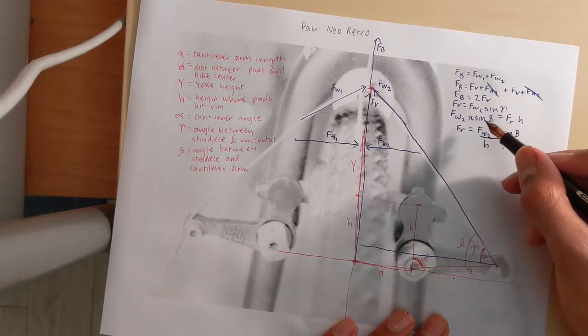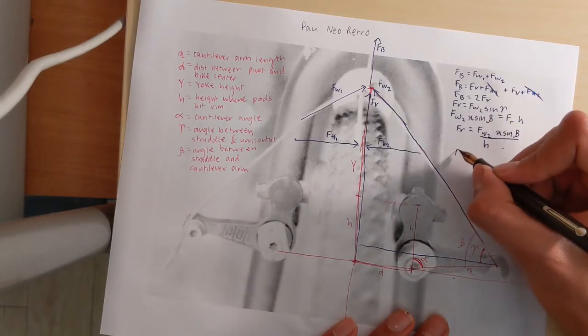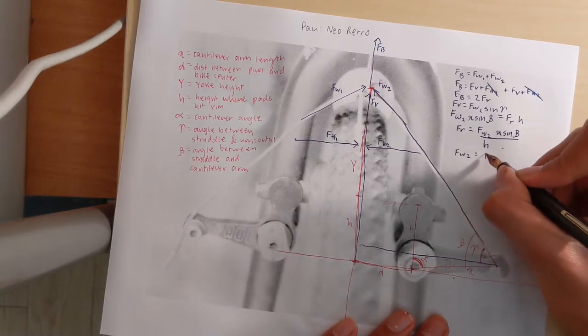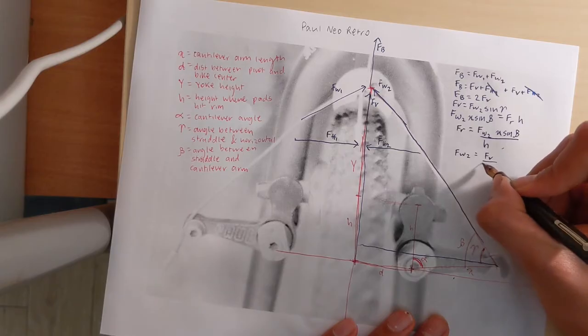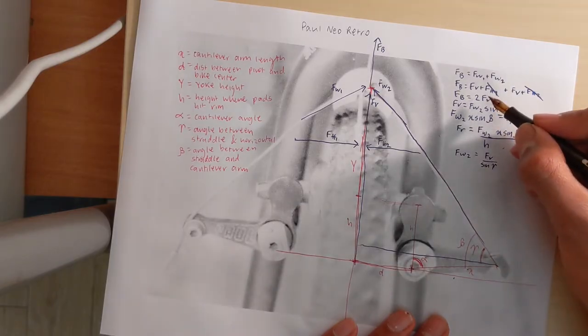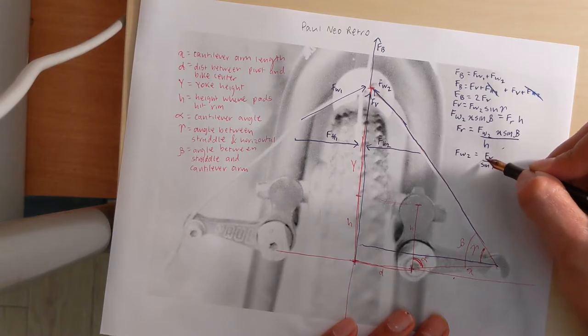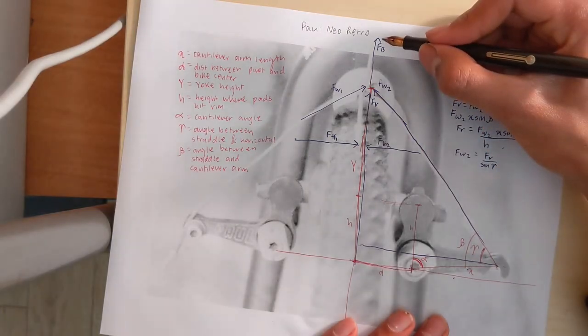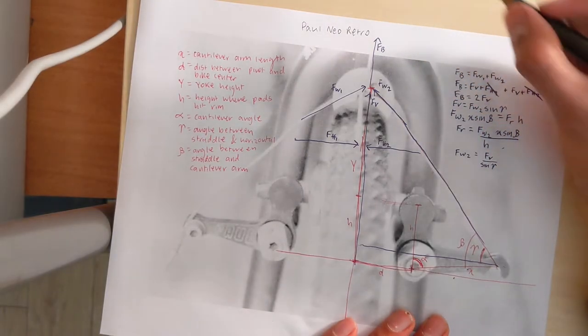Fr equals Fw2 x sine of beta over h. Now we know that Fw2 equals Fv over sine gamma. And we know from here that Fv equals Fb, our original brake line force, over 2.